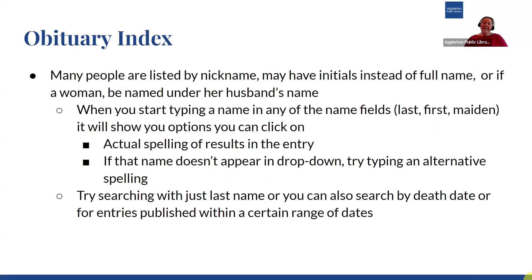Many people in the index are listed by their nicknames, or may have initials instead of their full name, or if it's a woman, sometimes they're only listed under their husband's name. Thankfully in our index, we've tried to combat this difficulty in finding people — when you start typing a name in any of the name fields, the last name field, the first name field, or the maiden name field, it's going to show you options that you can click on.